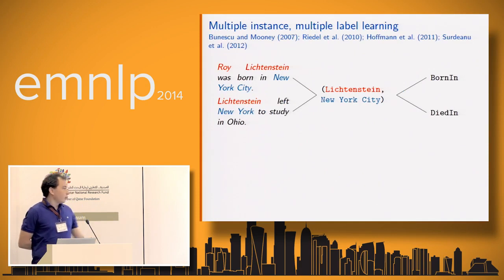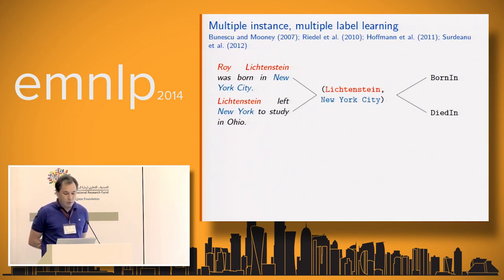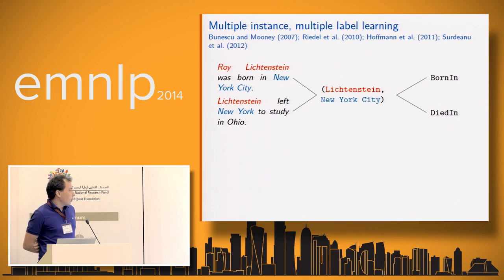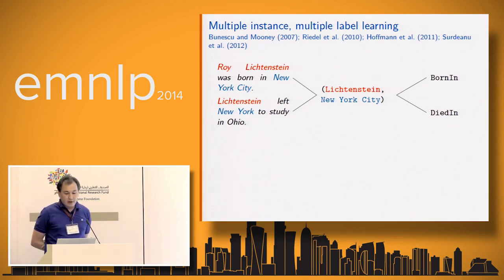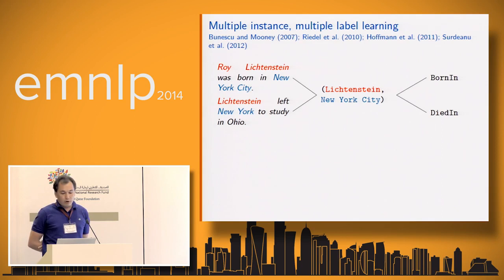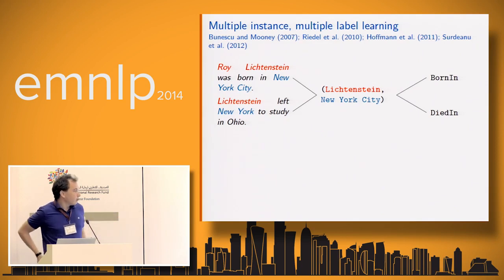This is actually an example of a multiple instance, multiple label learning problem. Multiple instance because each pair of entities is represented by different sentences, and multiple label because you want to predict different labels for each pair of entities — for example, the fact that Lichtenstein was born in and died in New York City.